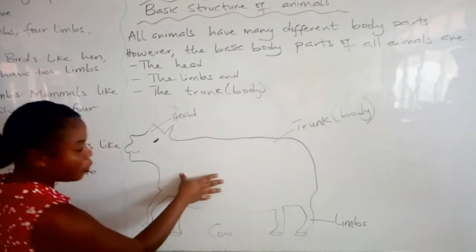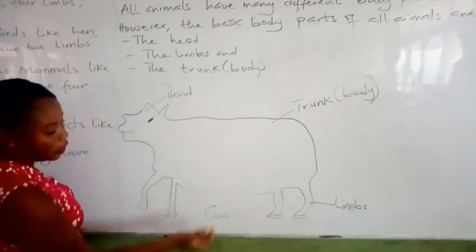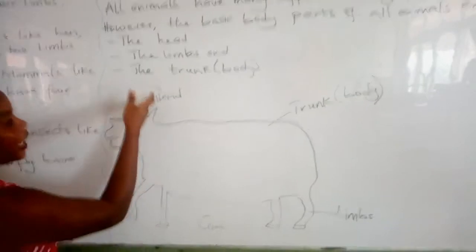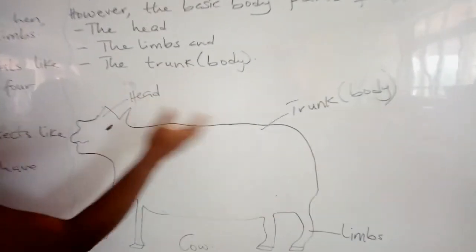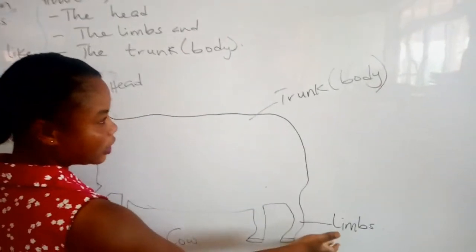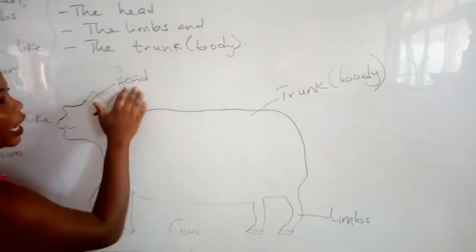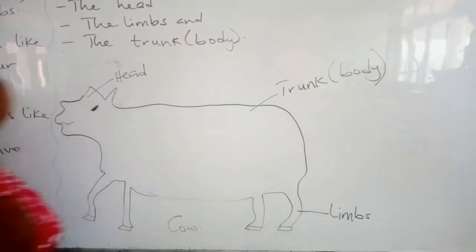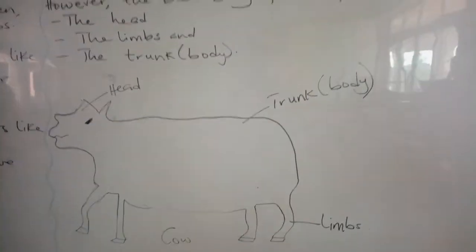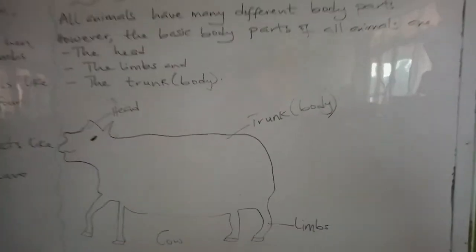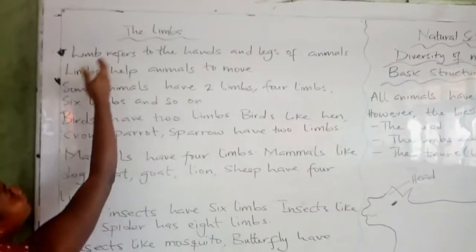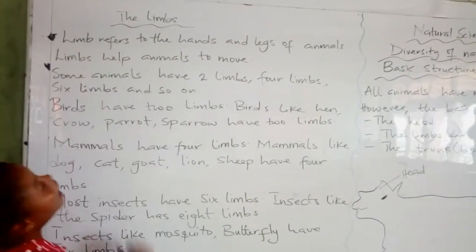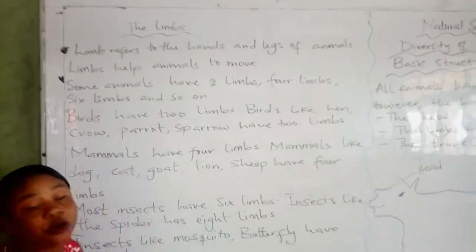So this is an example of an animal — this is a calf. This is the head, the trunk, and the limbs. Today we are going to talk about the limbs of animals. The limbs refers to the hands and the legs of animals.